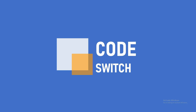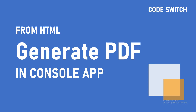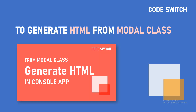Hi guys, welcome back to Code Switch. PDFs are everywhere, so how can we easily generate a PDF from an HTML string? If you have an HTML string, how can we convert that into a proper PDF with proper settings? That's what we're going to explore today. Before that, if you don't know how to convert a model class into HTML, we have a dedicated video for that, so I recommend you watch it.